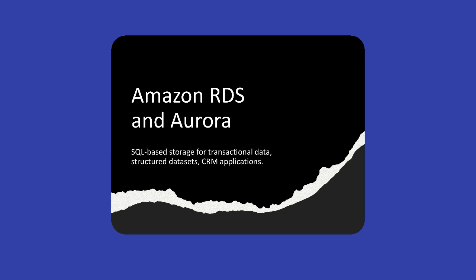If your model requires structured relational data, Amazon RDS (Relational Database Service) and Aurora are excellent choices. Use cases include transactional data in banking and financial services, healthcare records, CRM for storing customer interactions and preferences, and historical data analysis for retaining structured datasets for model training and analytics. RDS supports MySQL, PostgreSQL, and SQL Server, making it a strong candidate for traditional machine learning use cases.